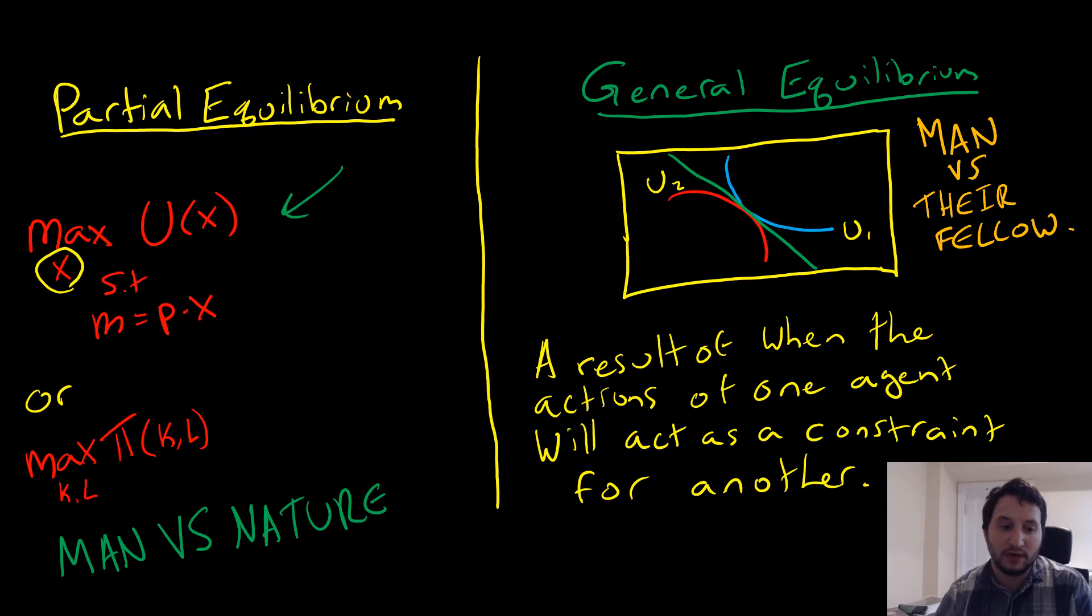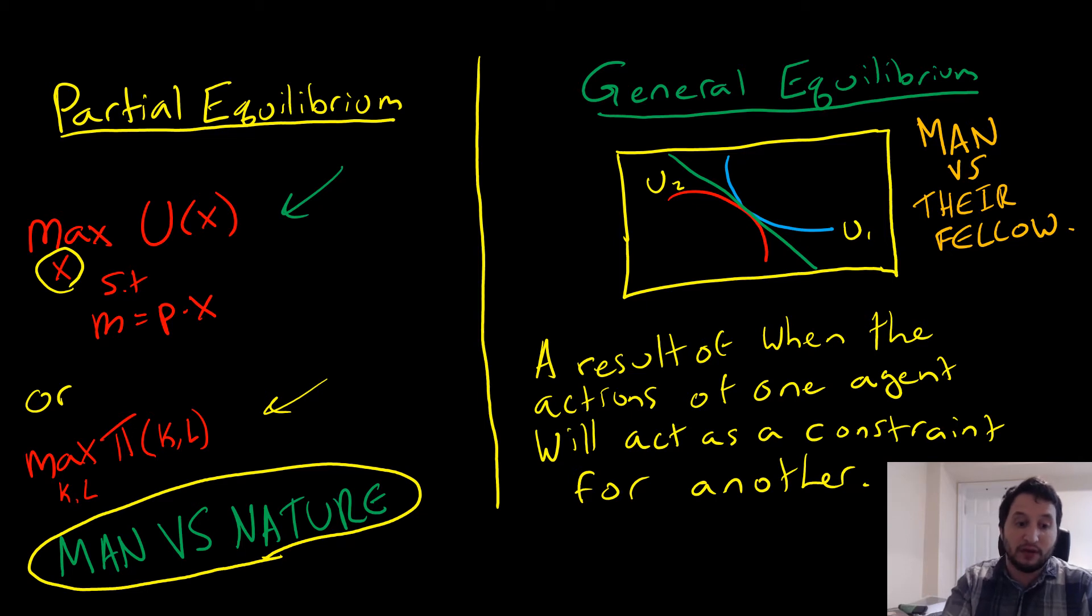Or we can think about the firm's problem down here where it's looking to maximize its profits by choosing the optimal amounts of capital and labor. I like to think about these exclusive allocation problems as man versus nature type problems because it's not really thinking about people; it's just thinking about one agent choosing a set of goods and services where we get a price equilibrium vector that maximizes this utility or profit. We're just thinking about where to put things subject to our budget constraint or costs. These are very static type things that we're dealing with.